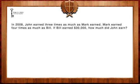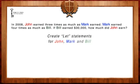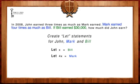The first step to solving this question is to create let statements for John, Mark, and Bill. We're going to let X equal Bill, since he is a base level. We're going to let 4X equal Mark, since Mark earned four times as much as Bill. And we're going to let 12X, or three times 4X, equal John, since he earned three times as much as Mark.